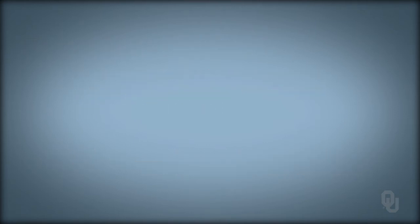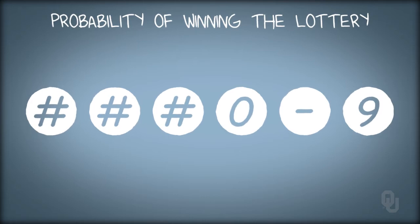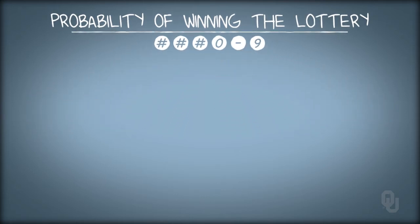For example, let's think about the probability of winning the lottery when the lottery ticket requires us to pick six numbers from 0 to 9. That is, let's define the event of interest as choosing the correct lottery number.